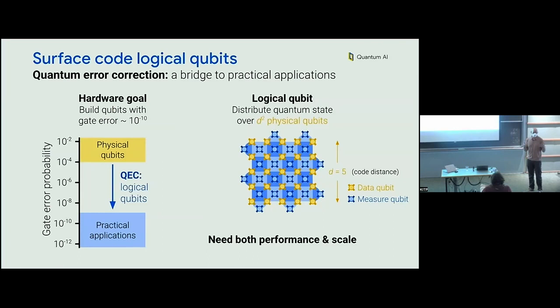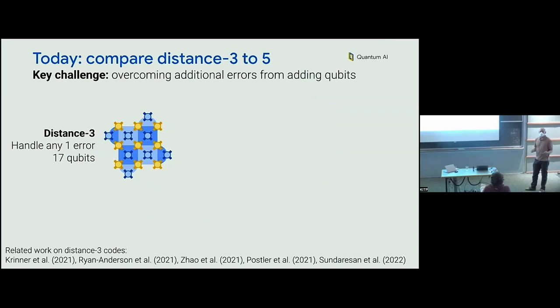We're focusing on the surface code, distributing the quantum state over d-squared different data qubits, so that any one or two qubit errors can be handled. In order to cross this bridge, we need both performance and scale. If your underlying operations are not sufficiently high performance, the bridge is going to crumble under its own weight. The key idea is that if performance is good enough, as we scale up the size, the error per logical operation should decrease exponentially.